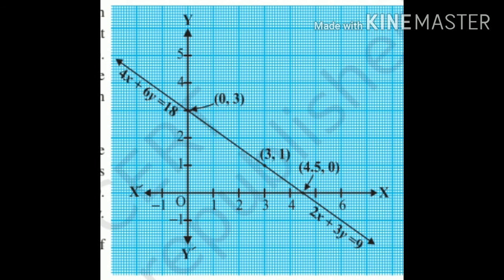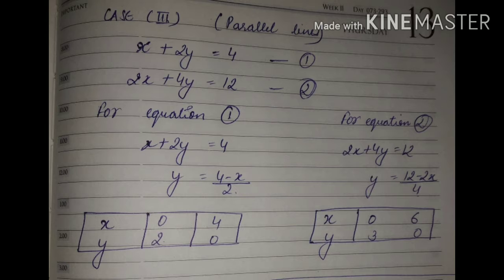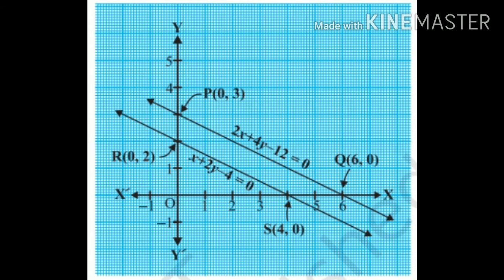Now let us see Case 3. I have taken two equations: x + 2y = 4 and 2x + 4y = 12. I solved them and plotted the graph. In this graph we see that both lines are parallel to each other — they are not cutting anywhere. When we get this type of graph, we say that this algebraic equation has no solution at all.